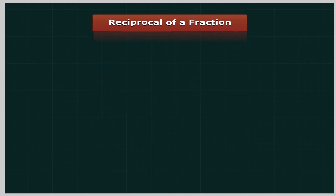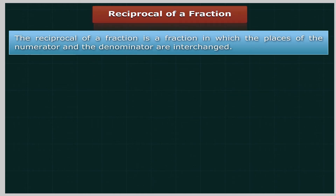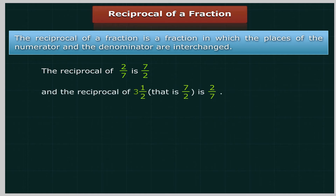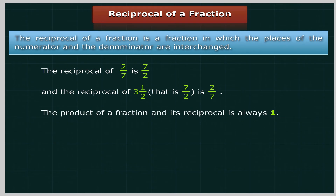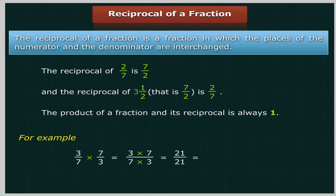Reciprocal of a Fraction: The reciprocal of a fraction is obtained by interchanging the numerator and the denominator. The reciprocal of 2 upon 7 is 7 upon 2, and the reciprocal of 3½ (that is, 7 upon 2) is 2 upon 7. The product of a fraction and its reciprocal is always 1. For example, 3 upon 7 multiplied by 7 upon 3 equals 21 upon 21, which equals 1.